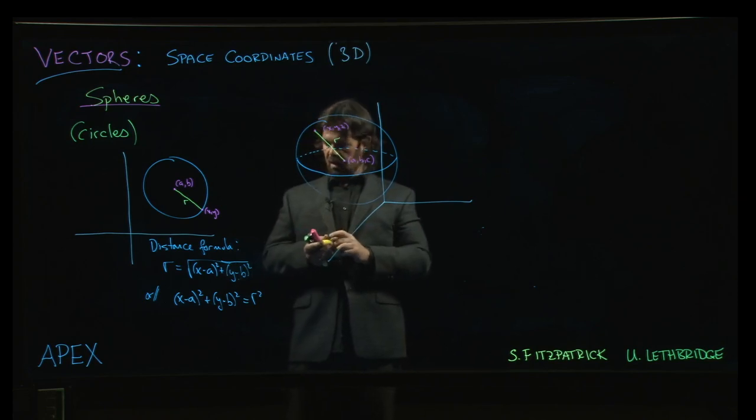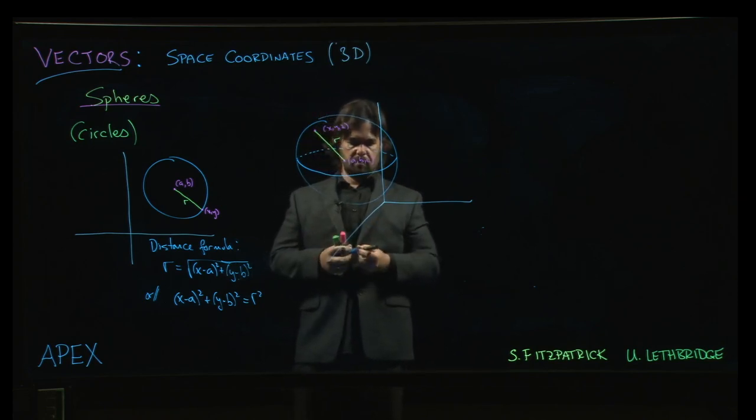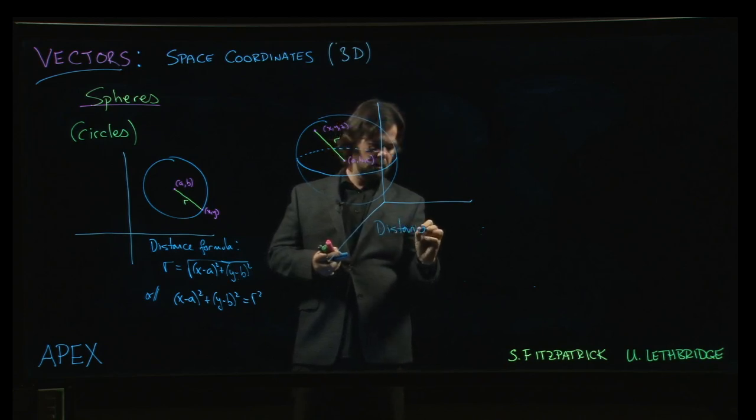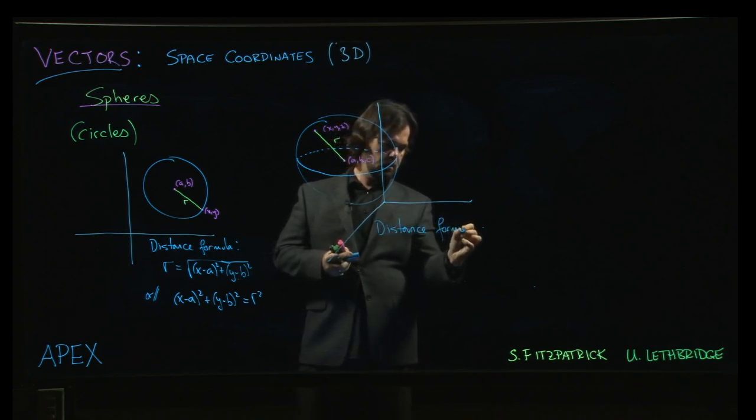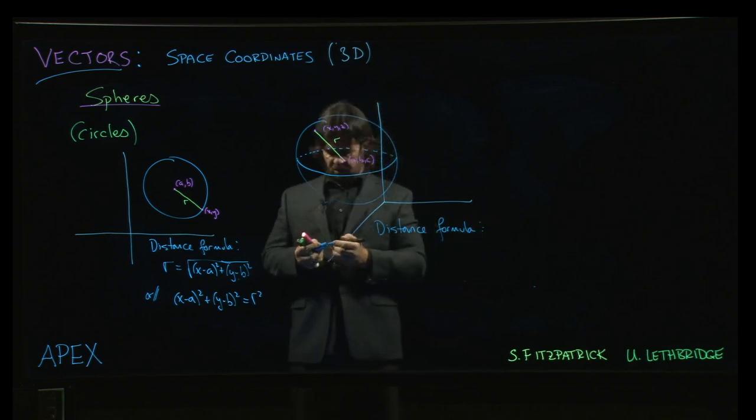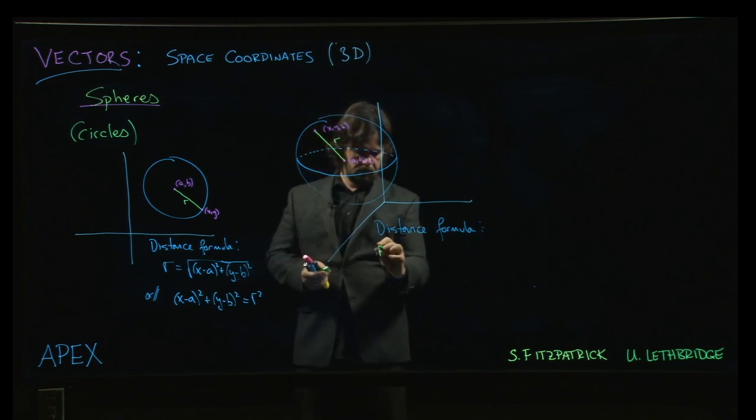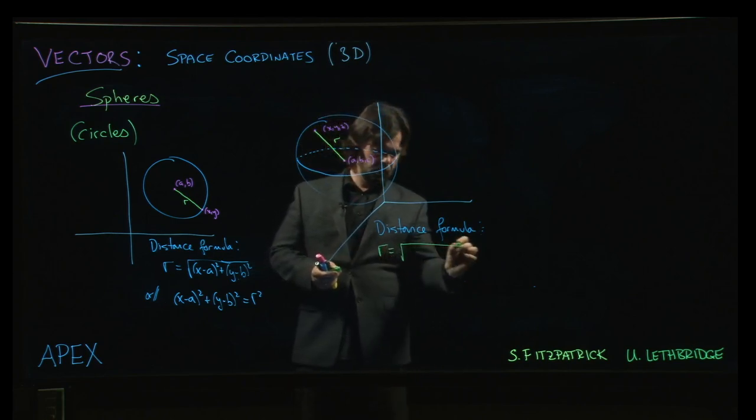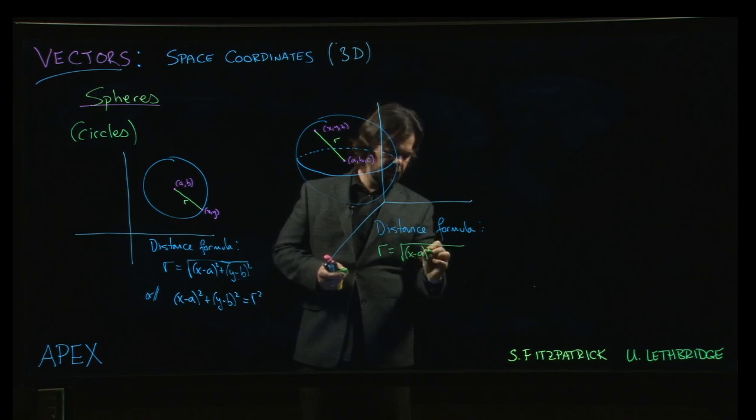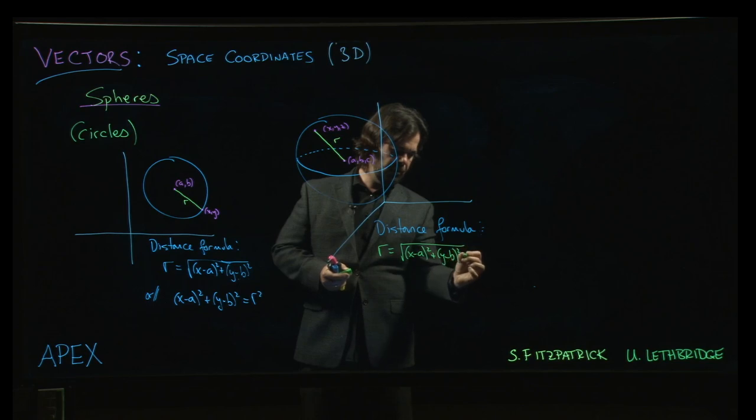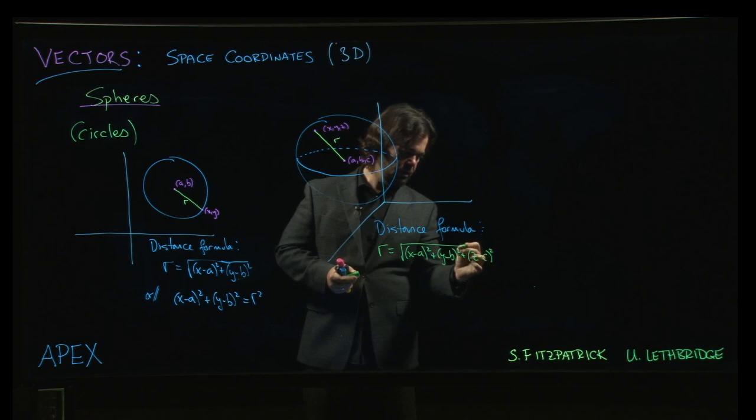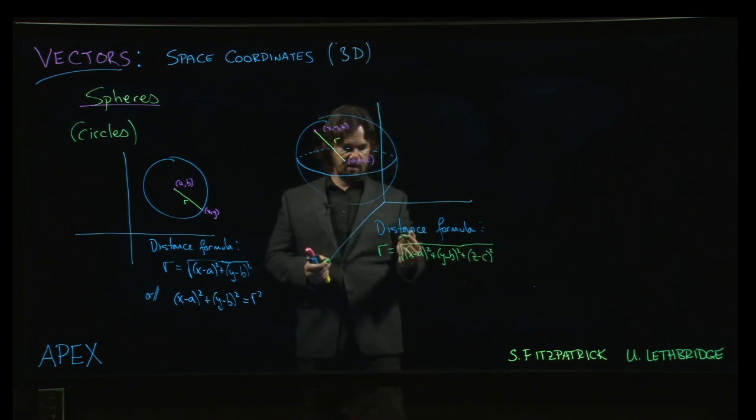So there's our radius r. And again, what the distance formula tells us is that that distance r is given by the square root of x minus a squared, difference in the x coordinates, y minus b squared for the y coordinates. And this time we also have to include the z coordinates. So z minus c squared.